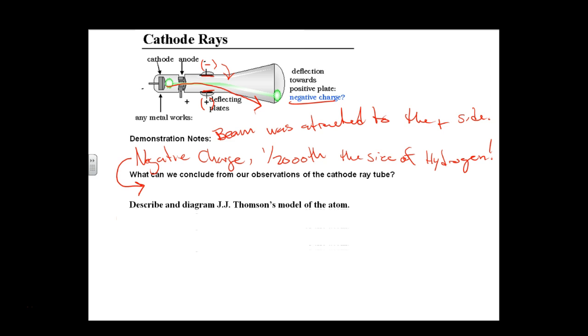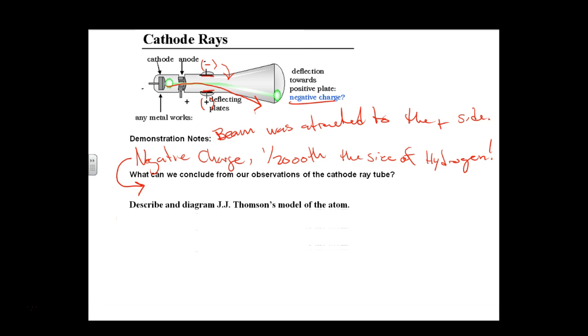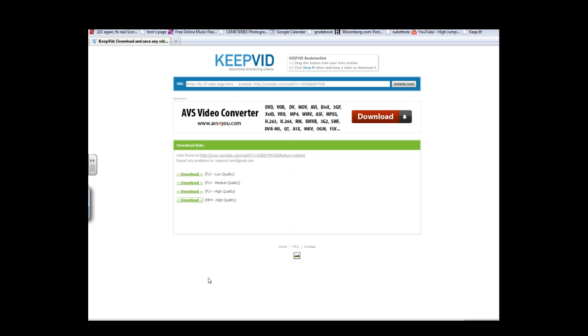Alright, J.J. Thompson, he was an interesting man. He had two names that he came up with for his model. One was the plum pudding model, and one is the raisin dough model. Now, that sounds disgusting to me. In fact, let's just do a little something since I'm just killing your time anyway, right?